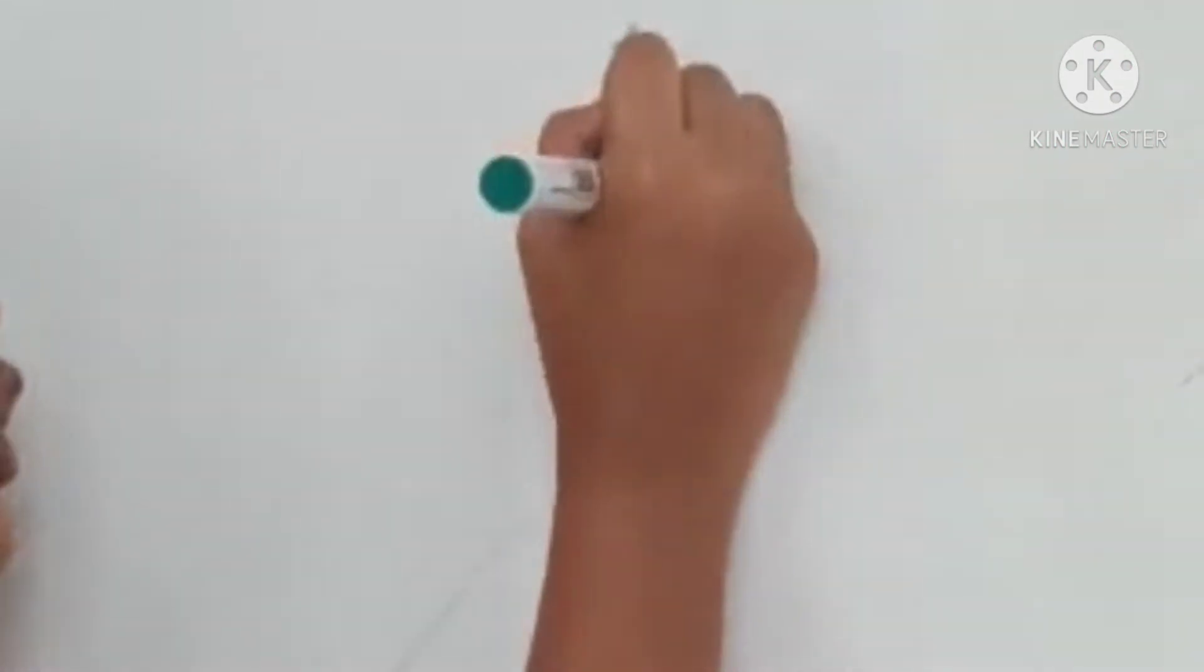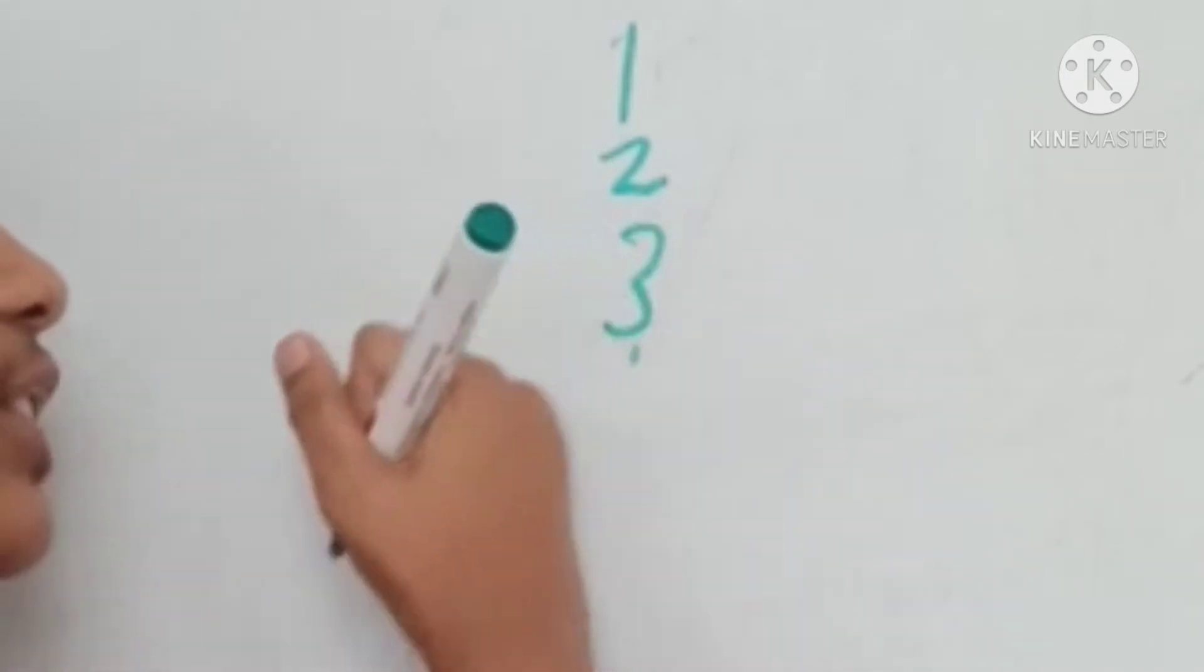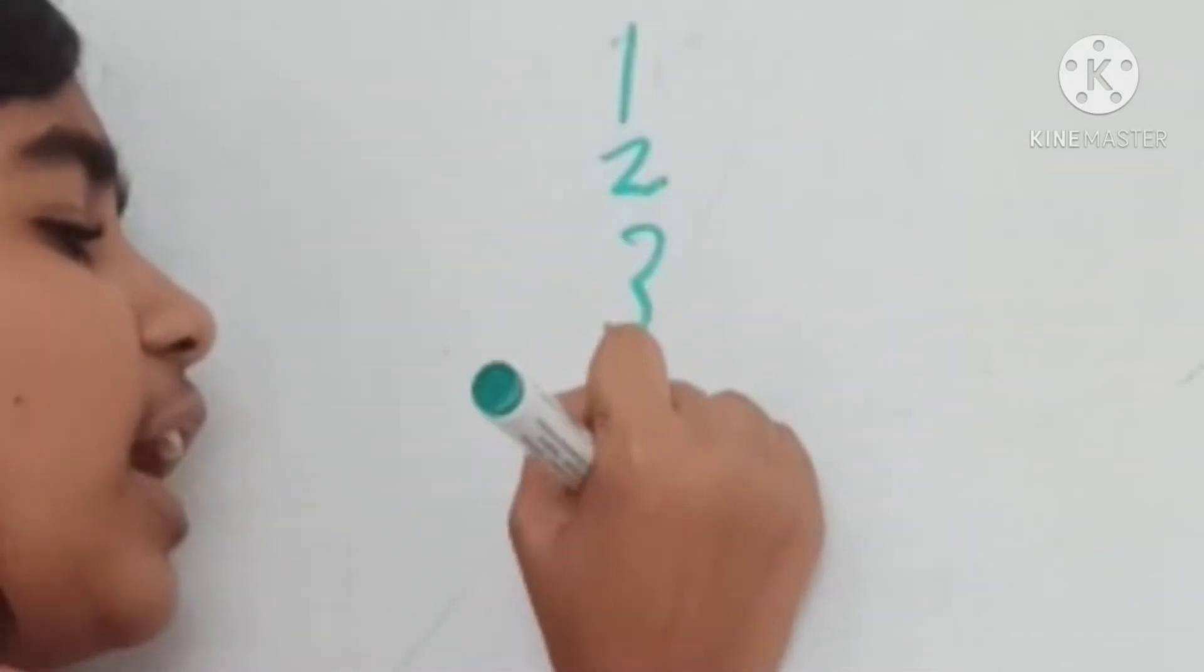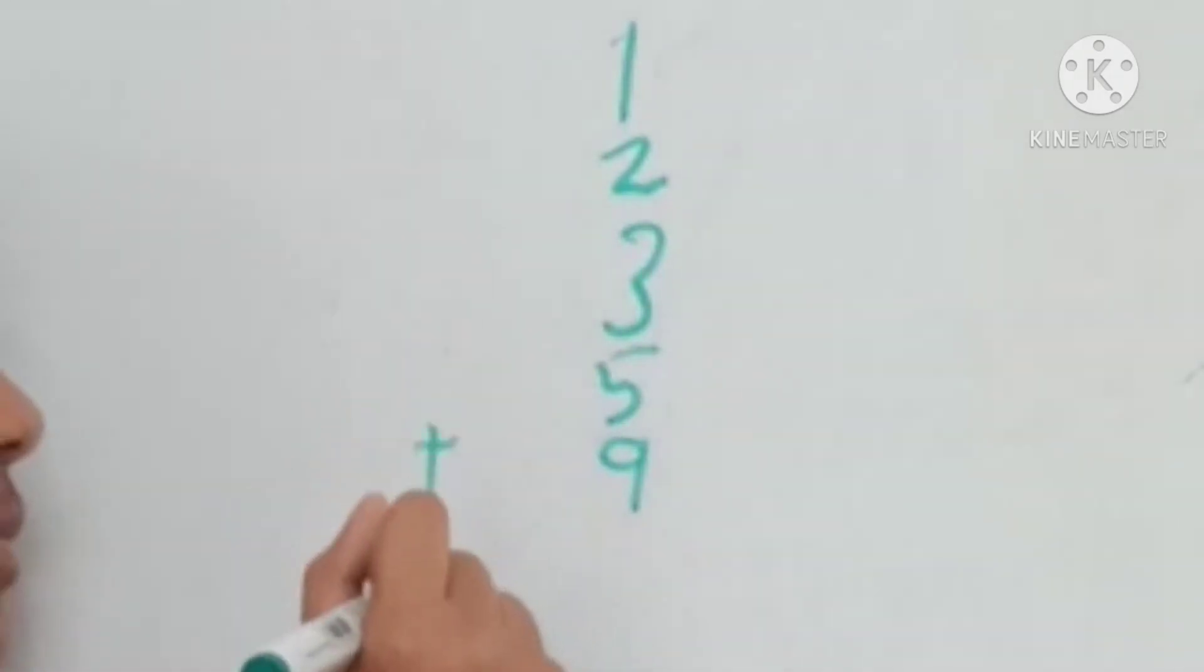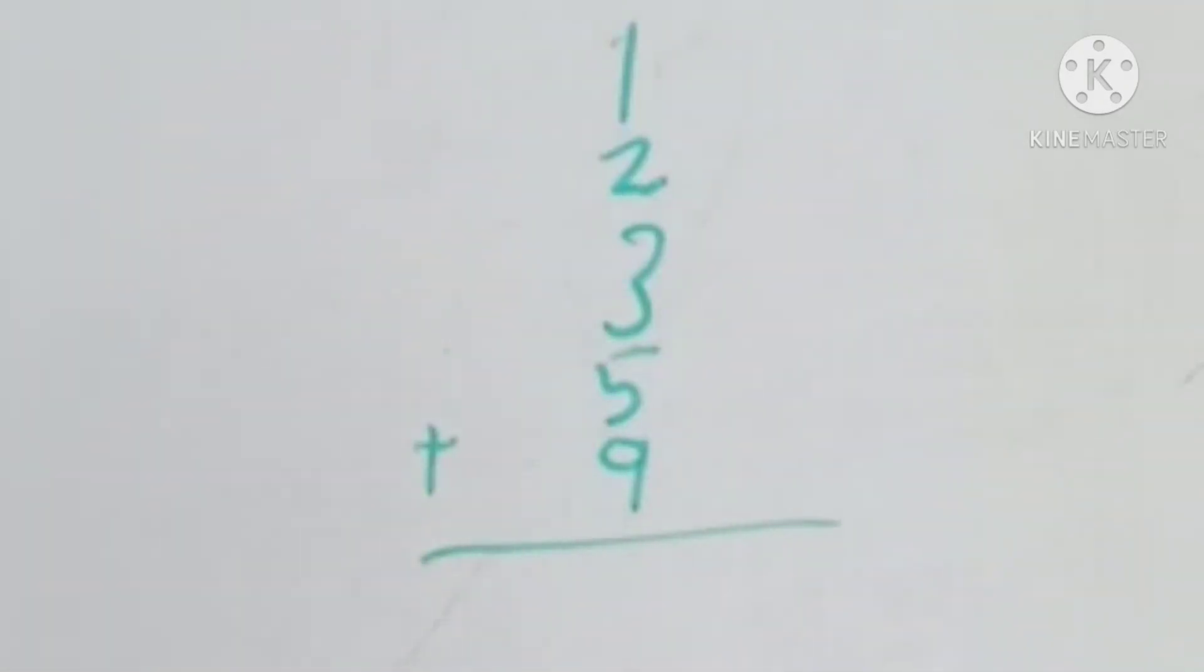Now let's take some examples. Let's take 12359. We'll take this.